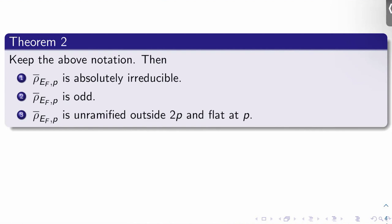Then three things are true. ρ̄_E_F,P is an absolutely irreducible representation. That means it's irreducible even when you tensor up to the algebraic closure of Q. ρ̄_E_F,P is odd. That means the determinant of this representation evaluated at complex conjugation is negative one. And three, ρ̄_E_F,P is unramified outside 2P and flat at P. Remember, flat is kind of the correct analog of unramified at the prime P itself.